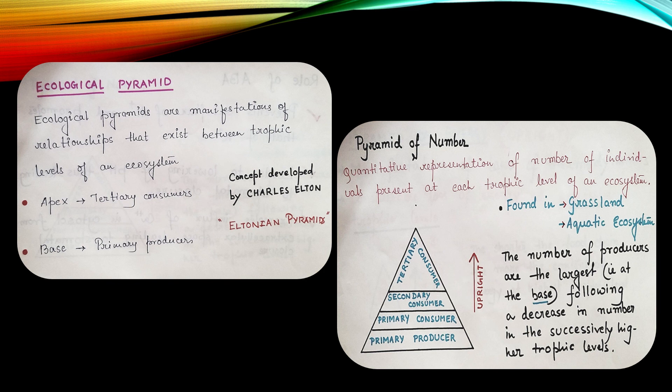Here we see it is absolutely upright. At the base we see the primary producer followed by primary consumer, secondary consumer and then finally comes a tertiary consumer. The number of producers are largest that is at the base, following a decrease in number in the successively higher trophic levels.